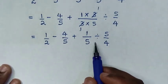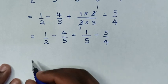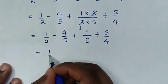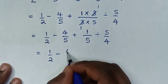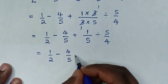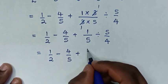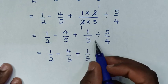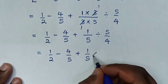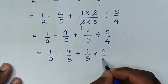Then in the next step, we'll deal with this division. So it will be equal to 1 over 2, then minus 4 over 5, then plus — in here it will be 1 over 5 — then divide by 5 over 4, which is the same as times 4 over 5.